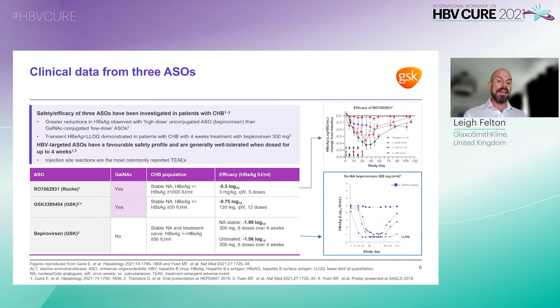As shown on the right, bepirovirsen is the only ASO that has been shown to induce transient clearance of HBsAg, which was observed in both treatment-naive patients and patients on stable nucleoside analogue therapy. This data was recently published in Nature Medicine.